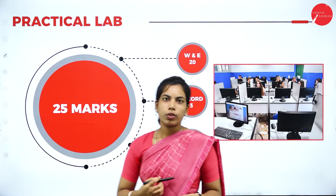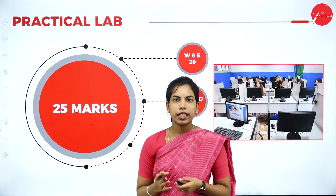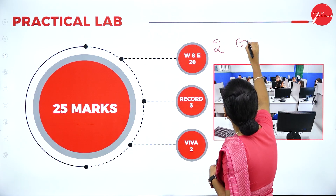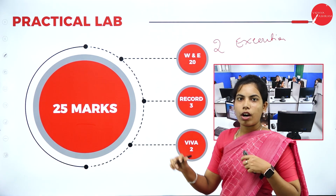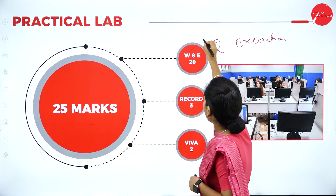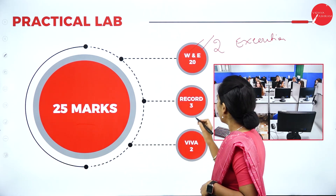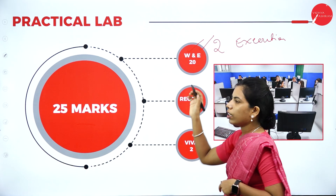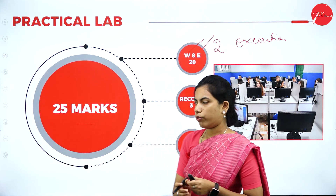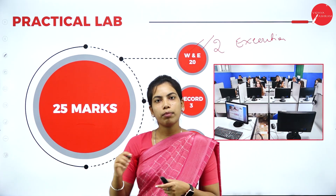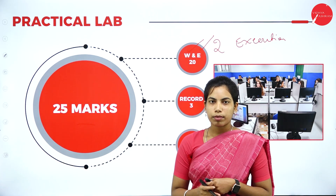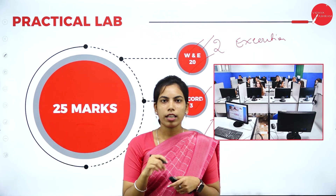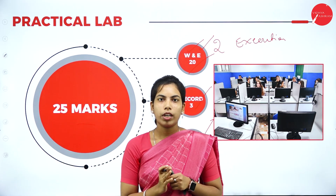For the practical lab, R programming requires practicing 10 programs. The external examiner gives 2 questions for writing and execution. You must write and execute the programs for 20 marks. Record maintenance carries 3 marks, and Viva carries 2 marks. Total practical lab marks: 25 for R programming.